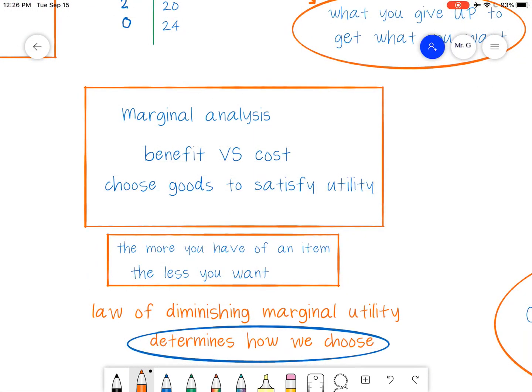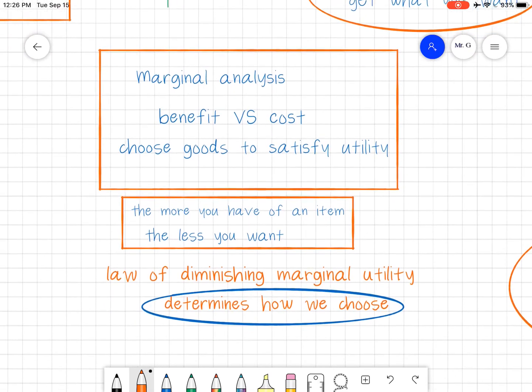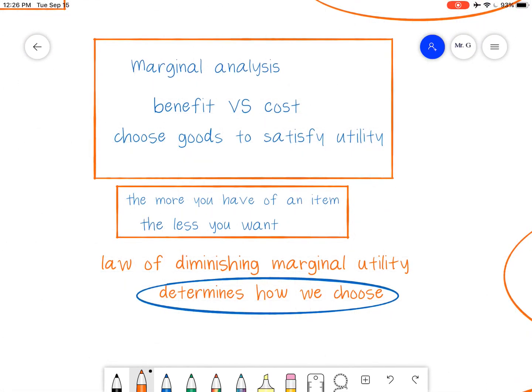So like free goods, things like air, the oxygen we breathe, say fresh, clean water in certain areas of the world, all of these, there's no opportunity cost with it. But for anything else that's scarce that we don't have a lot of, there is an opportunity cost for it.